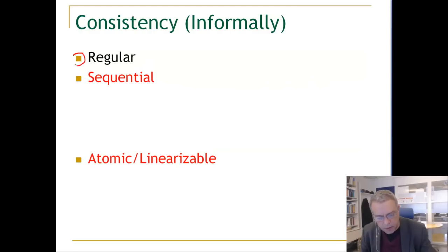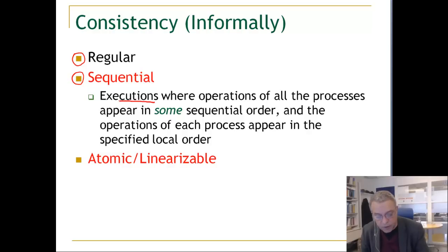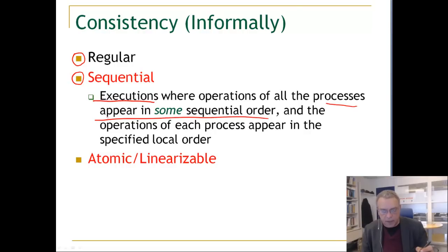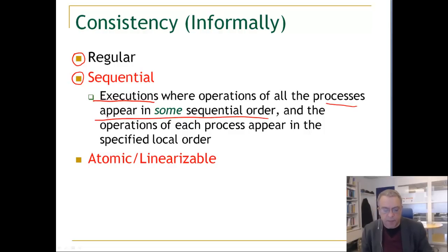We know about regular executions. So what is a sequentially consistent execution? Sequentially consistent executions are executions where operations of all processes appear in some sequential order. By sequential order, you can order an execution so that you start with an invocation followed by a response of that operation, then an invocation followed by a response of the next operation. The operations of each process appear in the specified local order.